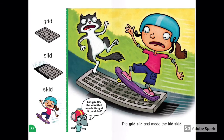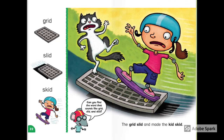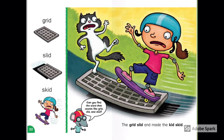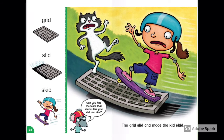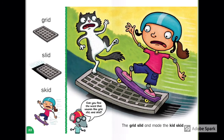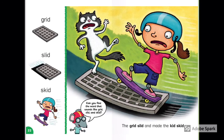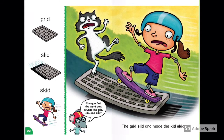Grid, Slid, Skid. The grid slid and made the kid skid. Look at the kid — is the kid a boy or a girl? Look at the pet — what animal is the pet? Are the pet and the kid happy, or are they scared?